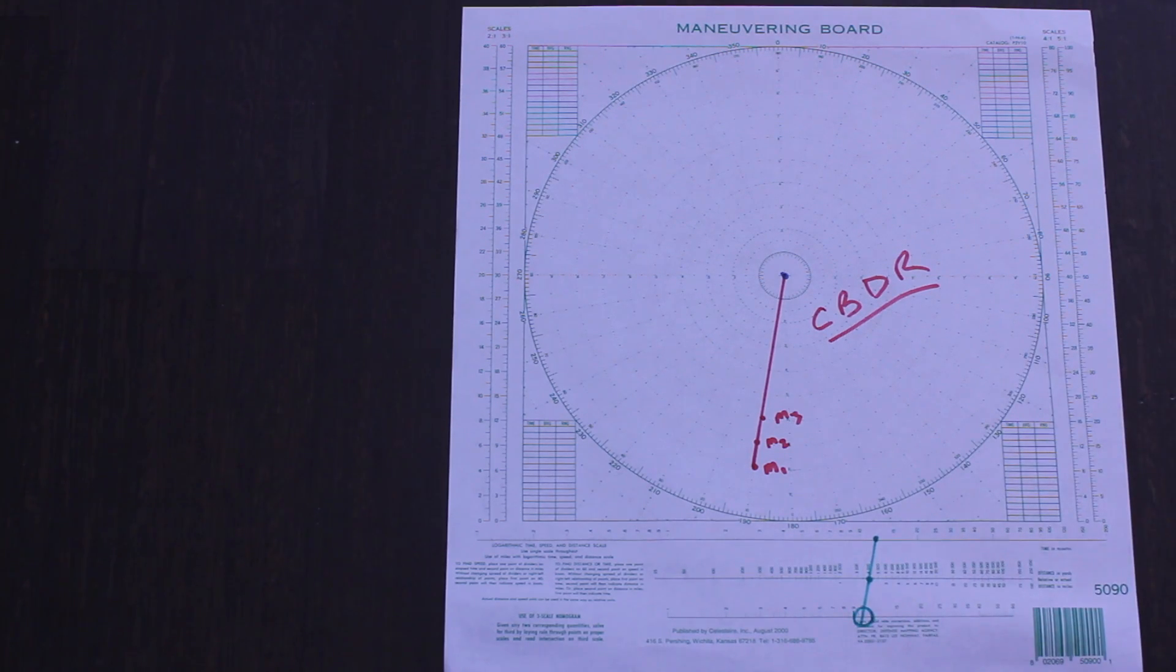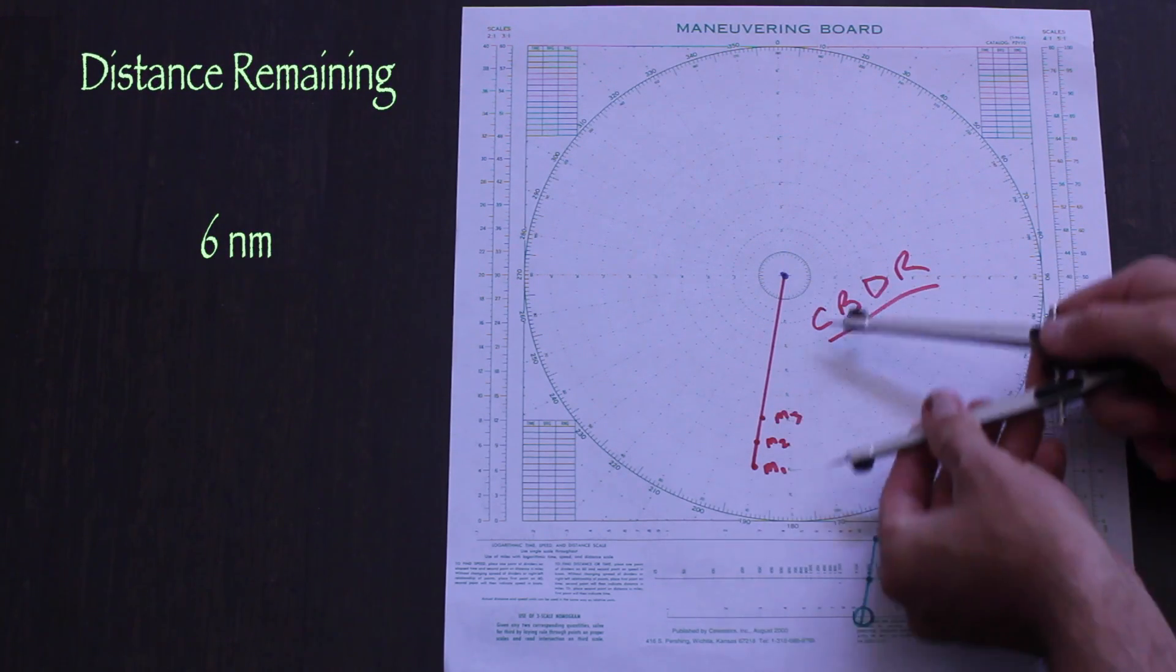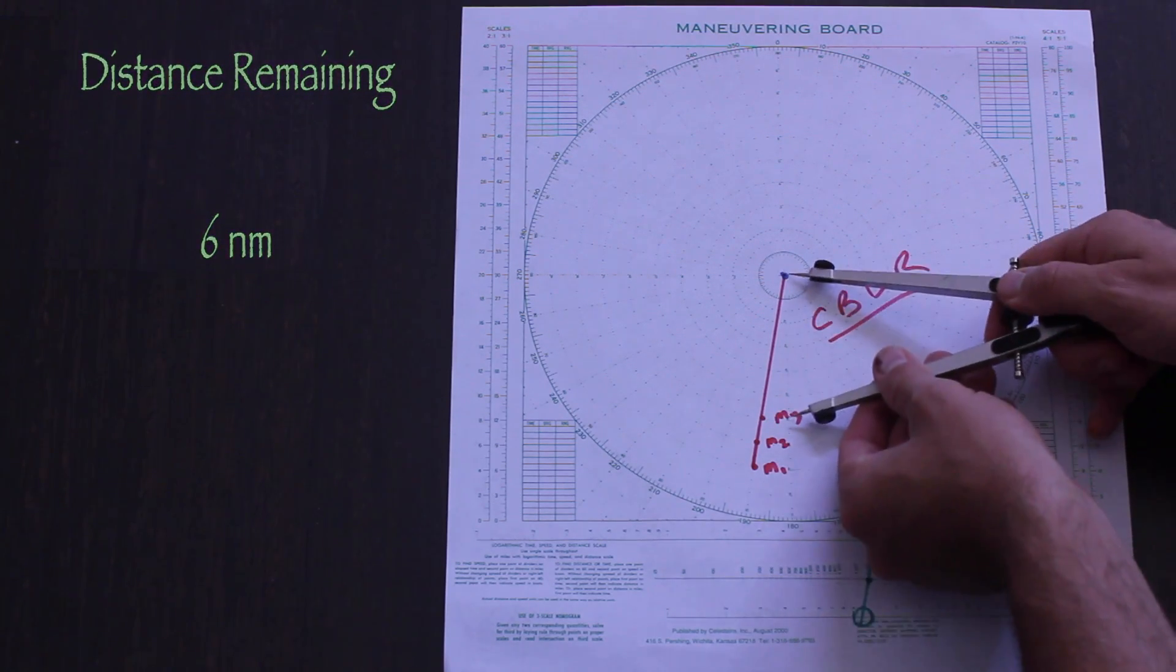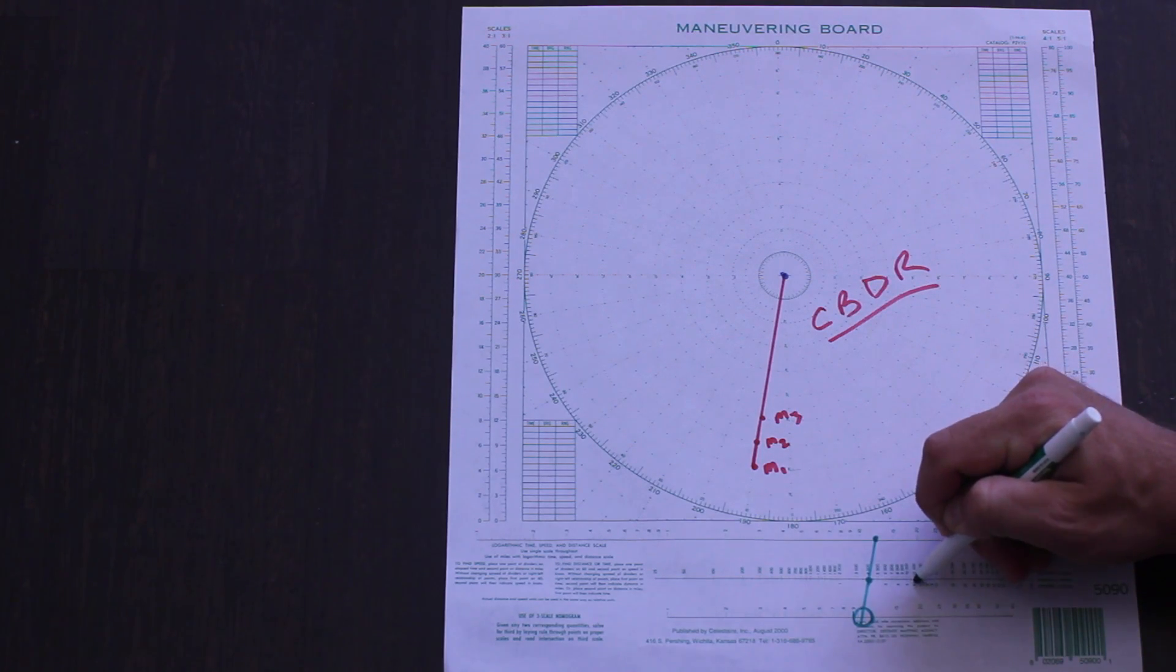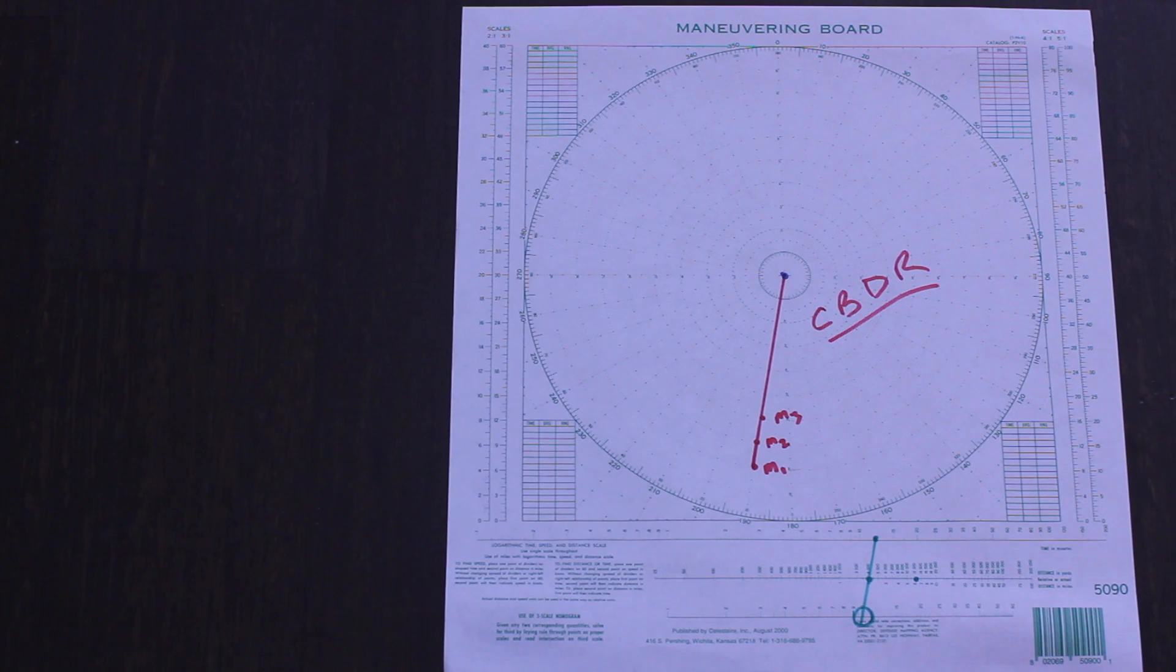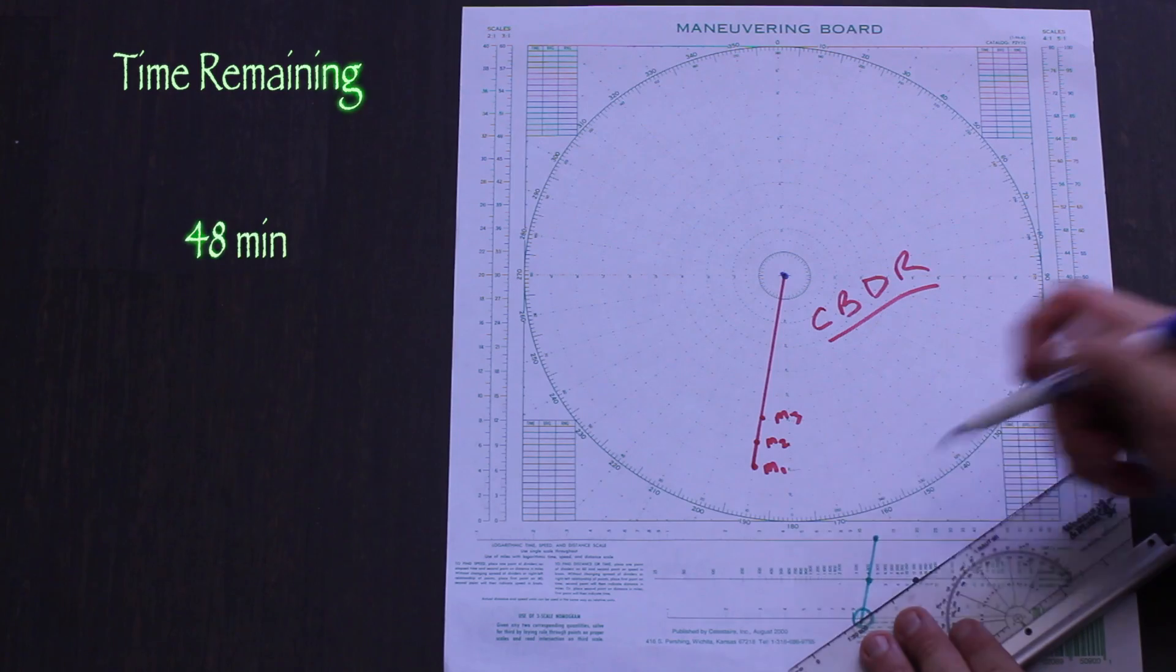Then it's just a matter of connecting the dots to find the contact's speed of relative motion. This is not the speed of the vessel, just how quickly it appears to be moving down the relative motion line. Then we note how far the contact still has to travel and work backwards up the nomogram to find the time that the contact will take to cover that ground. 48 minutes in this case. Plenty of time to make a radio call.